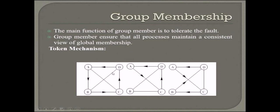This is how group membership is all about. The main function of group membership is to tolerate the fault. See, this arrow is not there, so we have no communication here. Group membership ensures that all processes maintain a consistent view of global membership. This is taken care of by the token mechanism.